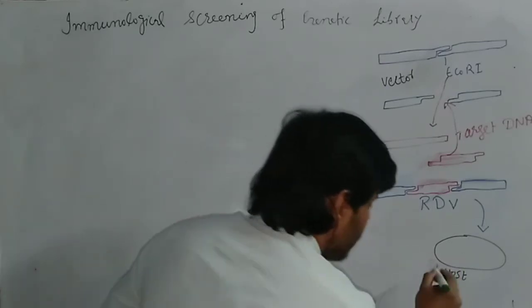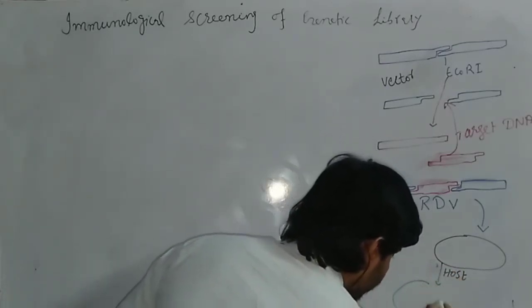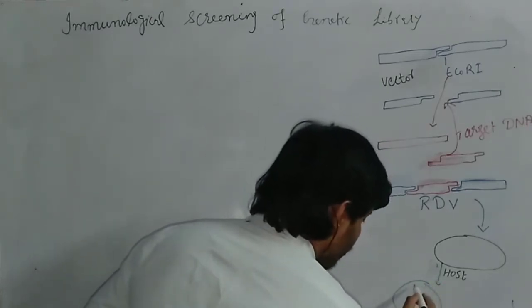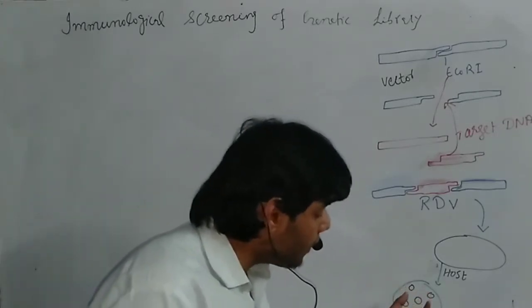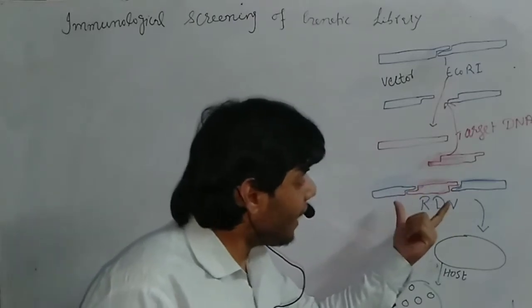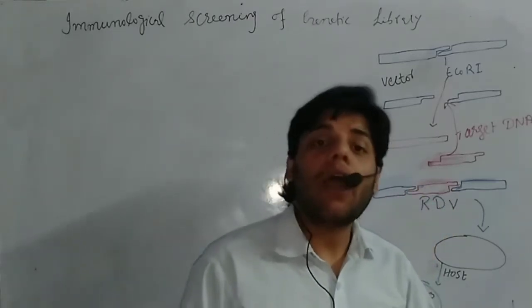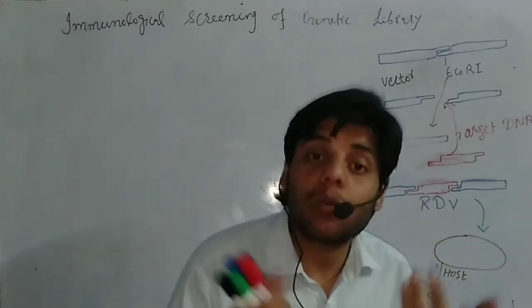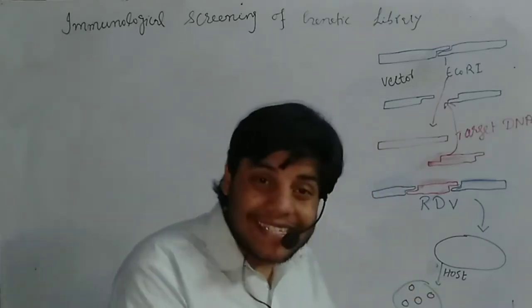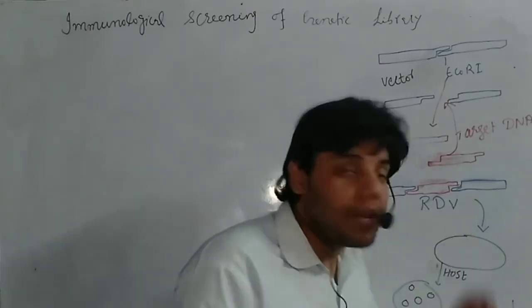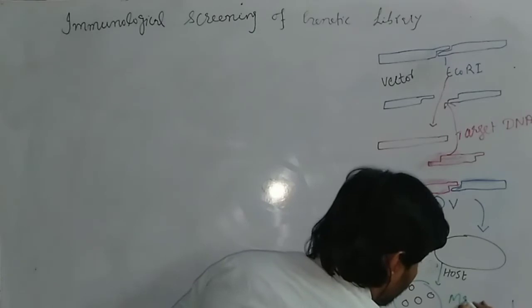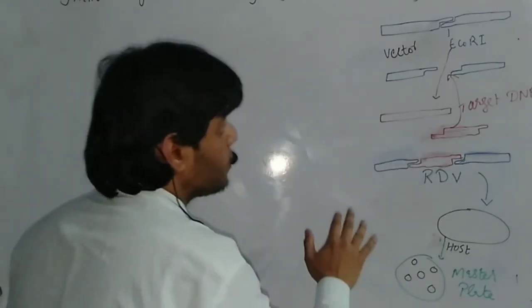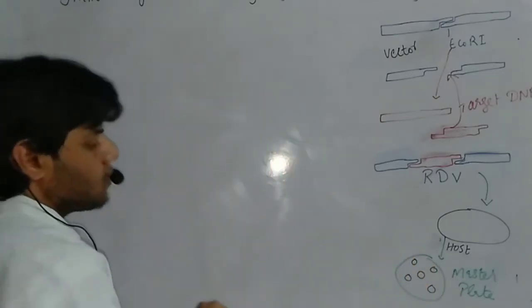We allow this bacterial cell onto the media, and we get many bacterial cell colonies. Remember, some colonies carry all those host cells that carry our recombinant DNA vector, and some do not. To know exactly which colony carries the recombinant DNA vector, we perform screening of this genetic library — this plate is what we call the master plate.